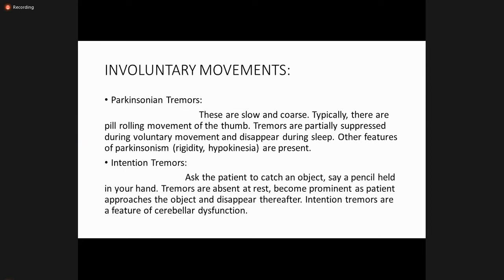Parkinsonian tremors: Parkinson's disease is basically a disease of old age. The tremors are slow and coarse, typically pill-rolling movements of the thumb. Tremors are partially suppressed during voluntary movements and disappear during sleep. Other features of parkinsonism include rigidity and hypokinesia. Intentional tremors: ask the patient to catch an object such as a pencil — the tremors are absent at rest, become prominent as the patient approaches the object, and disappear thereafter. Intentional tremors are a feature of cerebellar dysfunction.